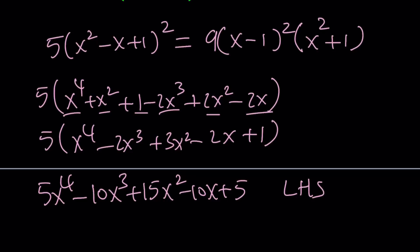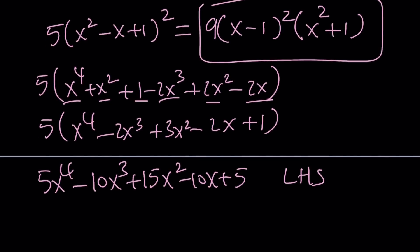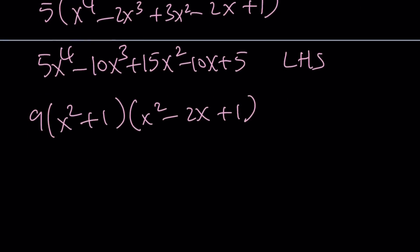Let's go ahead and take care of the right hand side. If you go ahead and distribute first, let's put the x squared plus 1 first and then expand the perfect square, and then we're going to distribute x to the fourth minus 2x cubed plus x squared plus x squared minus 2x plus 1.